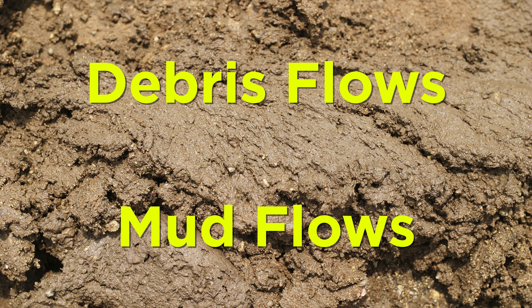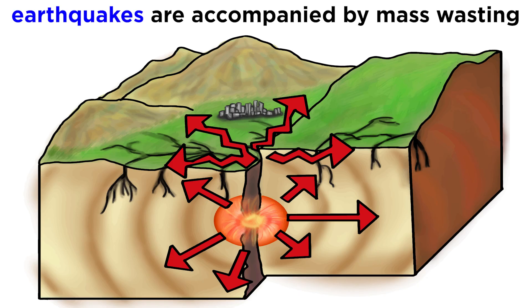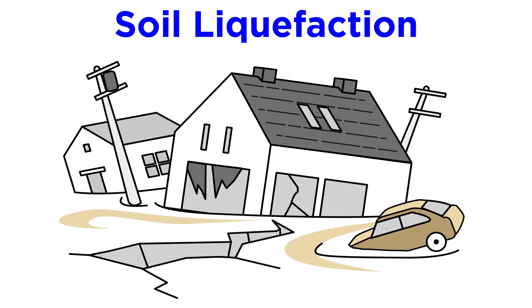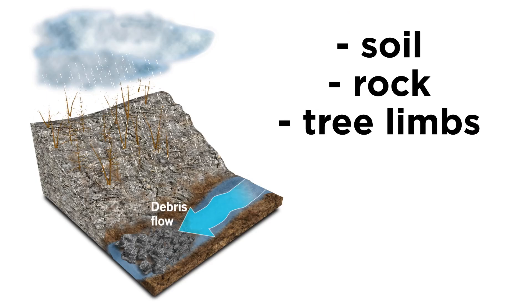The other two types of landslides, debris flows and mud flows, behave more like fluids due to higher amounts of water-rich mud greasing up the flow. Earthquakes are often accompanied by mass wasting events. The agitation of water-saturated sediments by seismic waves causes a loss of cohesion, allowing solid materials to behave more like fluids. This process is called liquefaction and can cause great damage to buildings and other structures built on unconsolidated materials, even on flat-lying land.